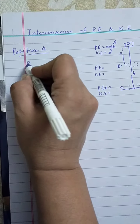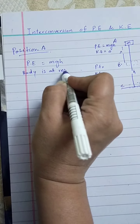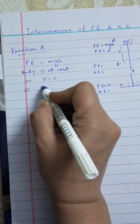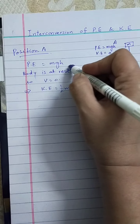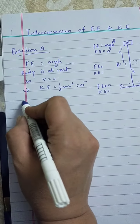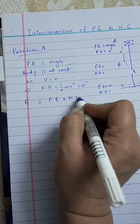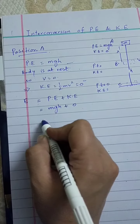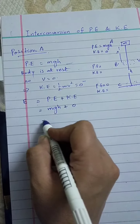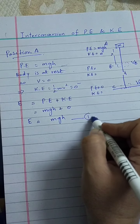At position A, the potential energy is equal to mgh. Since the body is at rest, velocity is zero, which means kinetic energy equals half mv² equals zero. So the total energy equals potential energy plus kinetic energy. Putting in values: potential energy is mgh and kinetic energy is zero, so the total energy at position A is equal to mgh only. This is equation number 1.